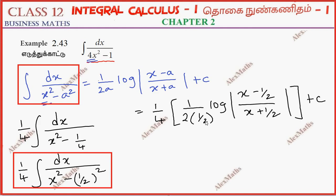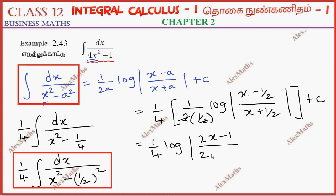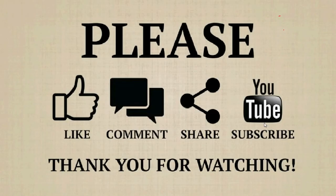So 1 by 4 equals log of — taking LCM — 2x minus 1 over 2x plus 1, plus c.